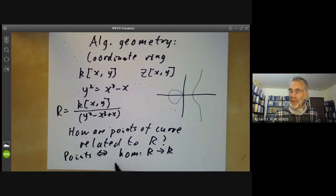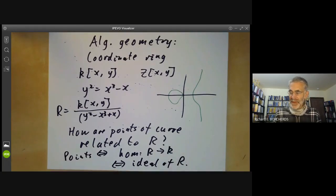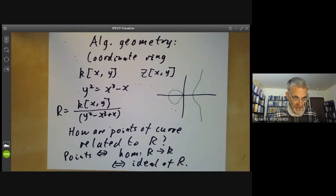If you've got a homomorphism from R to K, this corresponds to an ideal of R. This correspondence isn't one to one. But points of the elliptic curve turn out to be related to ideals of the ring R. One of the things commutative algebra has to do is explain the relation between ideals of the coordinate ring and the geometry of the algebraic curve.